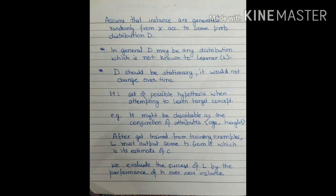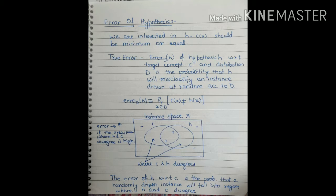In the previous section we studied the PAC settings, and to evaluate the success of a learner we have to check the performance by checking the error of the hypothesis. The next topic is the error of the hypothesis. Every hypothesis gives us output in the form of a target value. If the target value and the hypothesis output are the same, the difference between them is zero and performance is very good; if the difference is very high, performance is not good. The key term here is true error — we have to find out the true error of the hypothesis to evaluate performance.